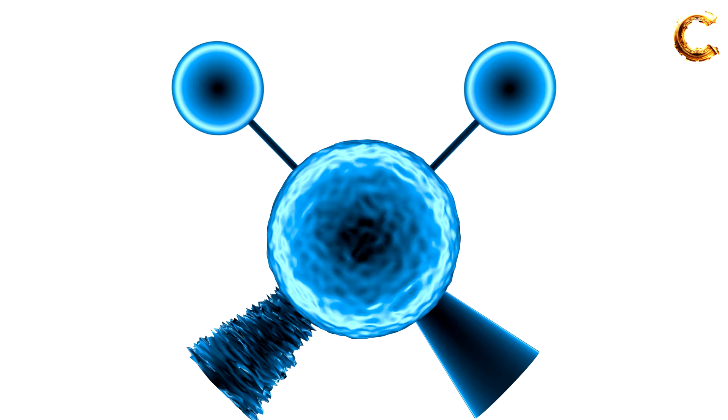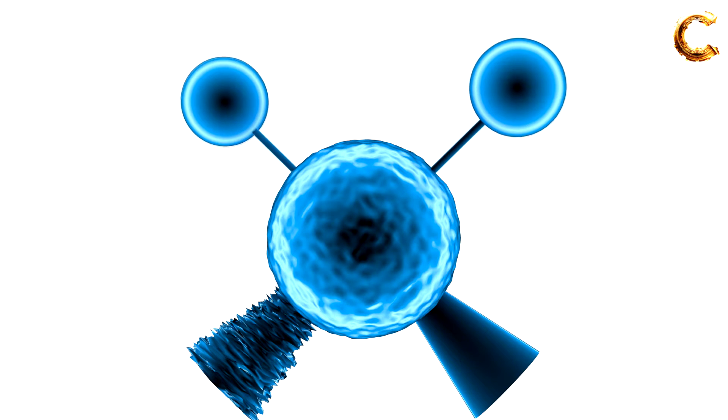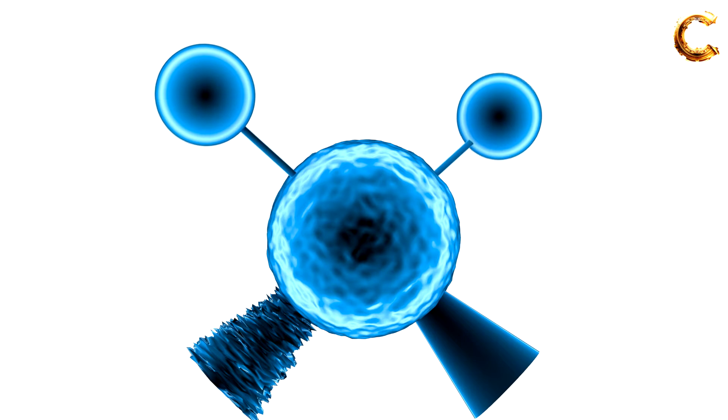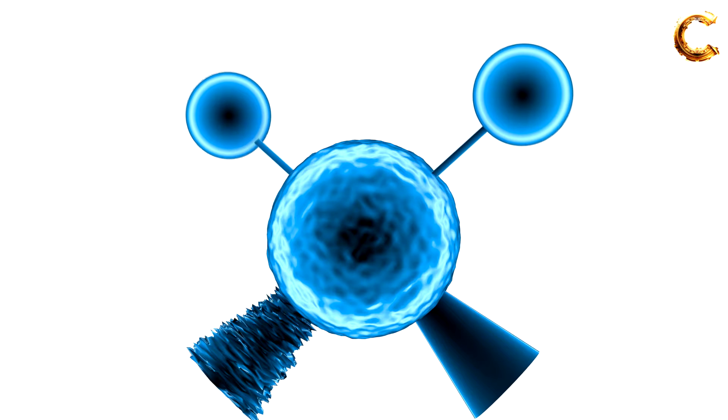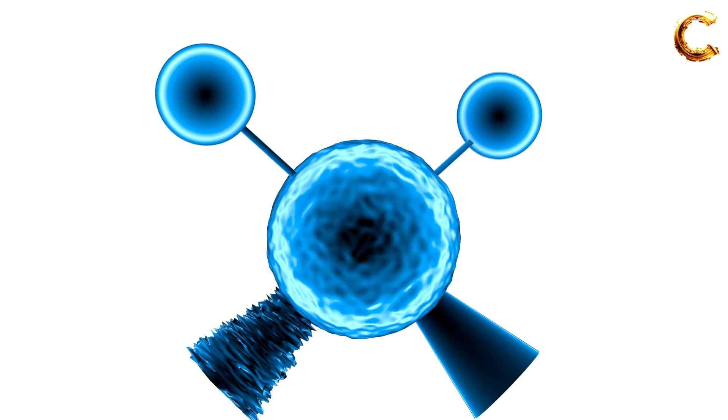In the IR spectrum, twisting vibrations appear as absorption peaks at characteristic wavenumbers. The positions of these peaks are influenced by the molecular structure, the types of atoms or groups involved, and the masses of these components.